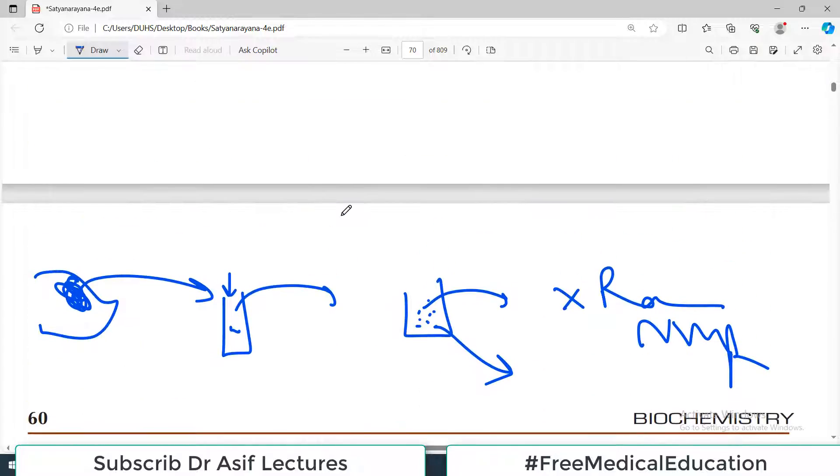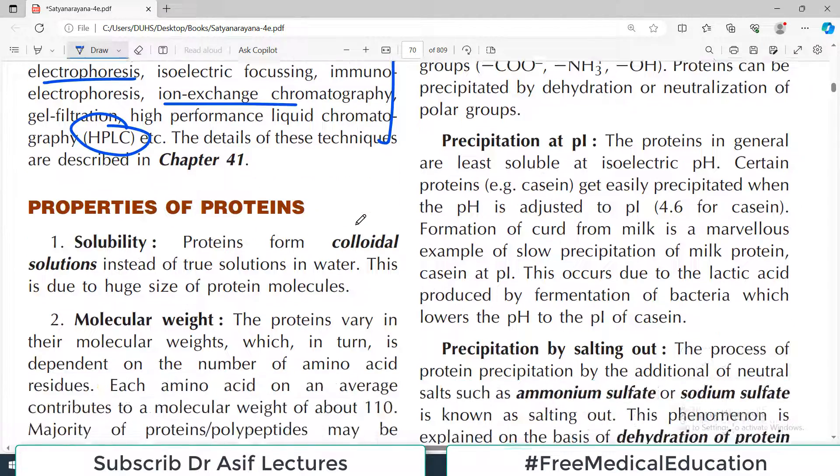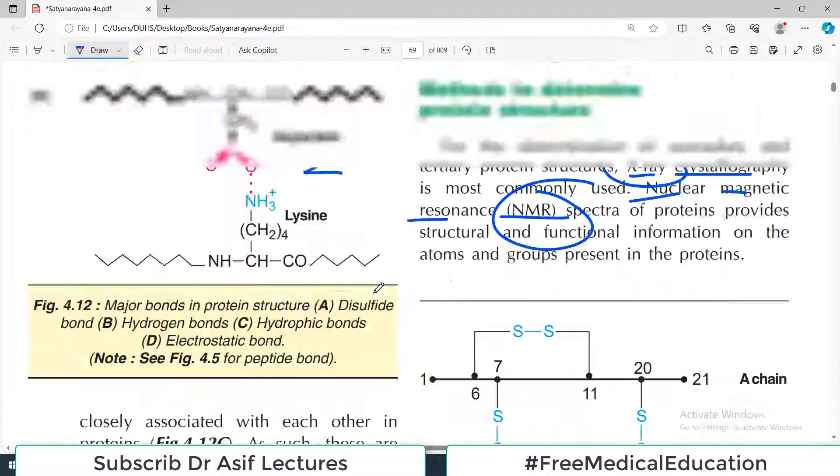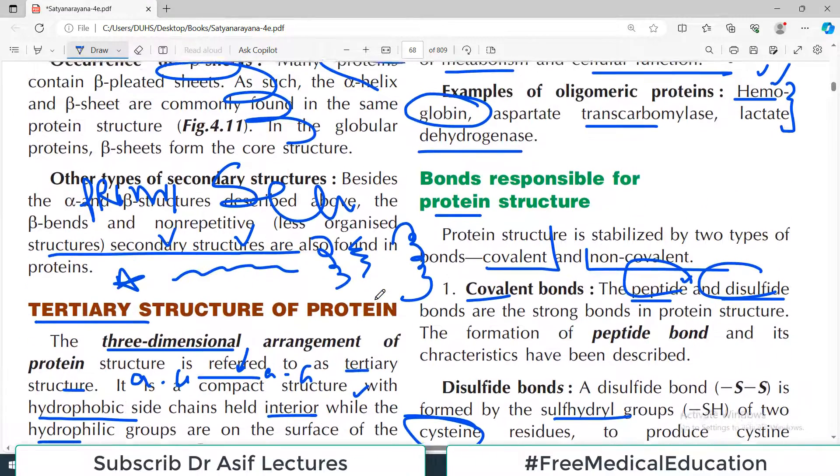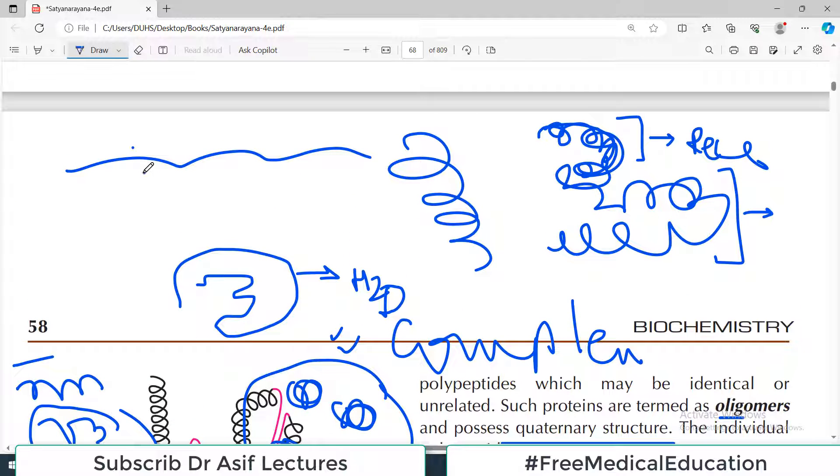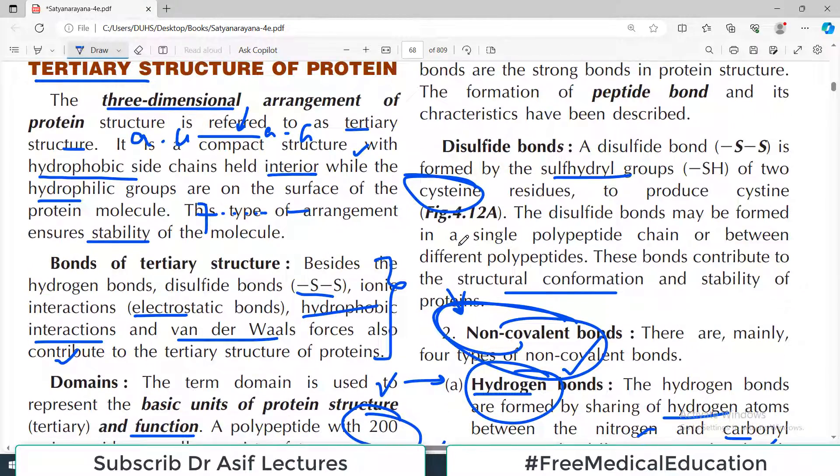That's all about protein tertiary and quaternary structure. This ends the discussion on the structure of protein. Next video will be about the properties of protein, then classification of protein, and that will be the end of the chapter. This chapter is going fine so far. I hope you are enjoying. Remember, protein structure is composed of primary, secondary, tertiary, and quaternary. Primary - many proteins end at tertiary structure. Some complex proteins have quaternary structure. I hope you liked the video. If you did, please share it with your colleagues and subscribe to the channel. Hit the bell icon. I'll see you in the next video.